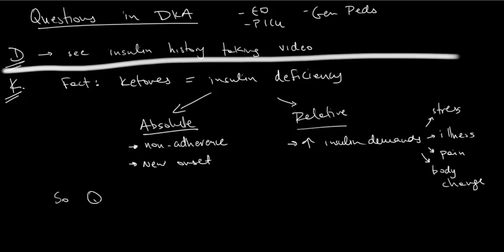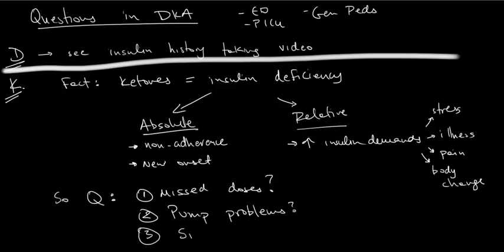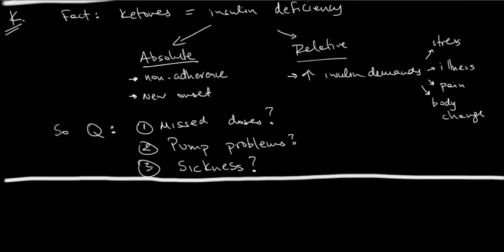So that brings us to the questions that are very important to be asked for these patients. First and foremost, have you missed any doses? Second of all, if they're in a pump, have they had any pump problems? And we'll talk about those. And also we have to evaluate for, investigate for reasons leading into DKA, so the relative deficiency, so have you had any sickness? Let me draw a line here and scroll down where we make more space for ourselves to talk about the A part, the acidosis.